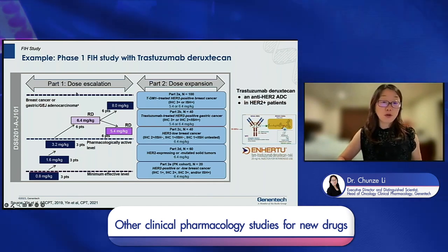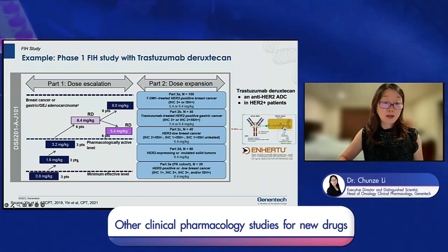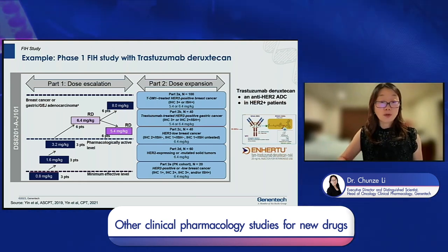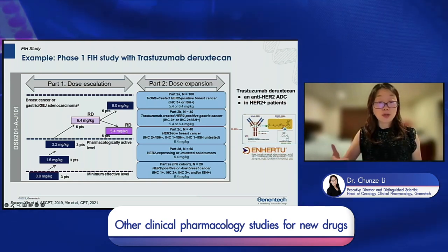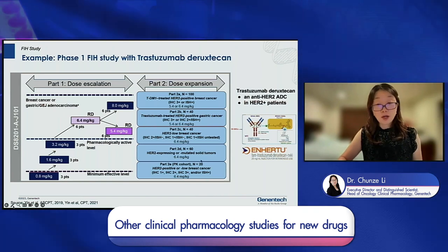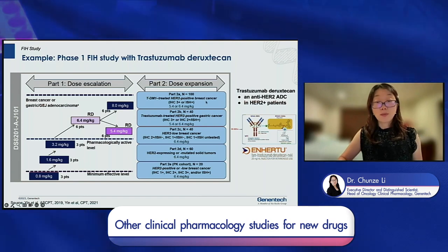They started to see anti-tumor effects — 8 mg/kg was not a DLT — and observed anti-tumor activity at 5 and 6 mg/kg, along with some safety signals. As a result, they decided to further expand the 5.4 and 6.4 mg/kg doses in expansion cohorts, focusing on specific populations: HER2-positive breast cancer, gastric cancer, and other HER2-low cancers.